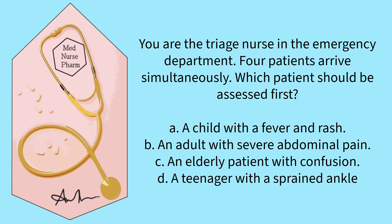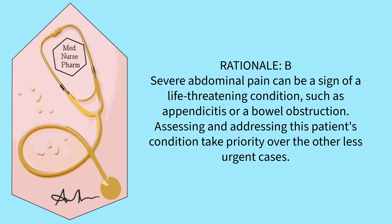You are the triage nurse in the emergency department. Four patients arrive simultaneously. Which patient should be assessed first? A child with a fever and rash? An adult with severe abdominal pain? An elderly patient with confusion? A teenager with a sprained ankle? The correct answer is B. Severe abdominal pain can be a sign of a life-threatening condition, such as appendicitis or a bowel obstruction. Assessing and addressing this patient's condition takes priority over other less urgent cases.